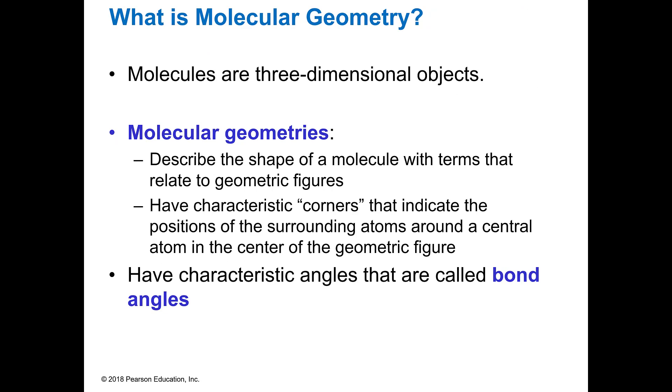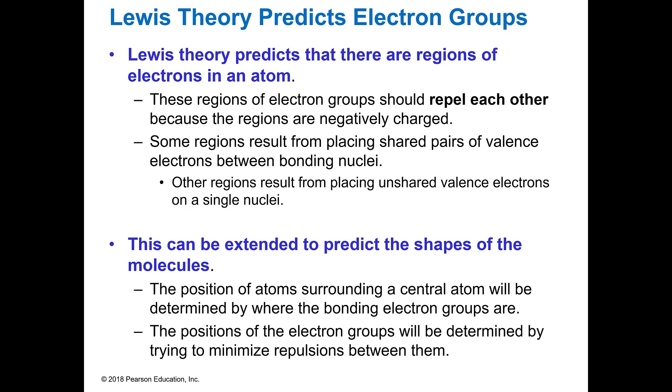So molecular geometry is the actual shape, and that's what we're trying to get to, the actual three-dimensional shape. And they have bond angles that denote what types of shapes they are.